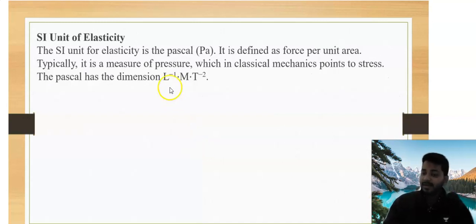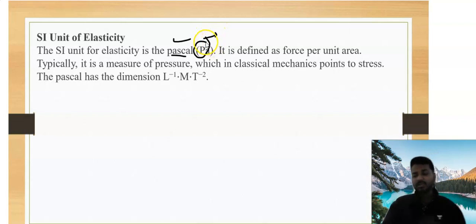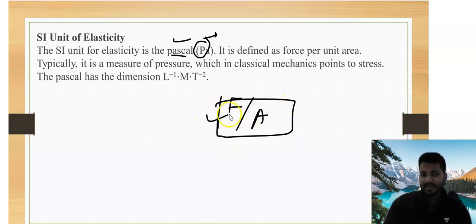We need to remember what is the unit of elasticity. SI unit of elasticity is Pascal. Sometimes some students have a question, so here it's considered by capital P. Scientist name is always initial capital P. Pascal is the great scientist and he gave the concept of elasticity, then we write as Pascal, as PA. It is defined as force per unit area. Its measure of pressure with classical mechanics point is L minus 1, M, T minus 2. This is the dimensional formula. This is for basic knowledge, you don't need to write.